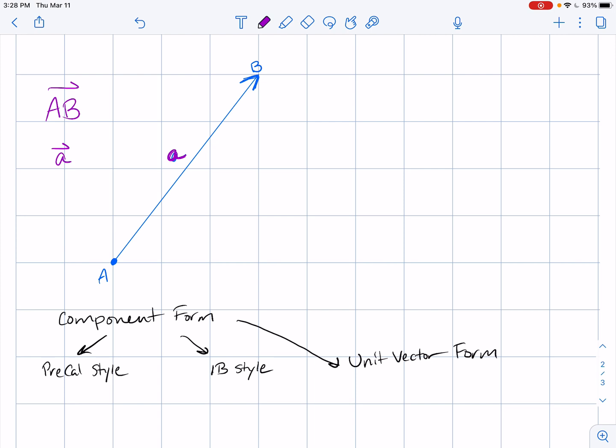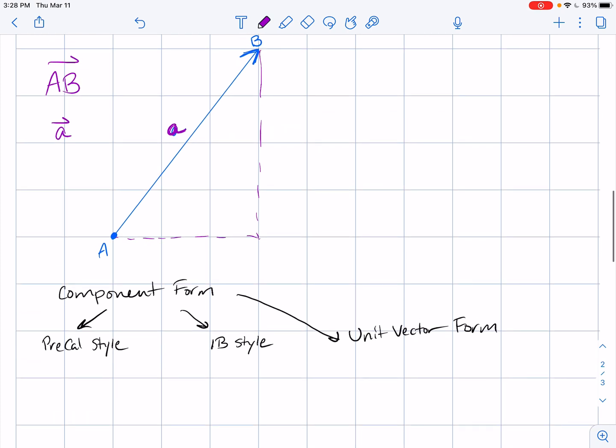We have different ways that we can label the components of this vector. If I look at this it has gone three units in the x direction and four units in the y direction. So in precal we would use these, we joked and called them pointy C's. 3 comma 4 is how we would name that vector.